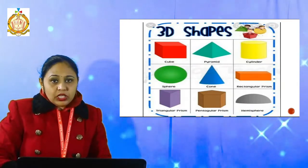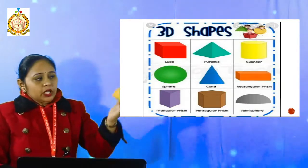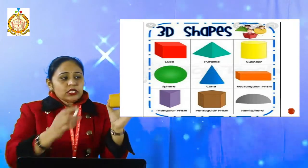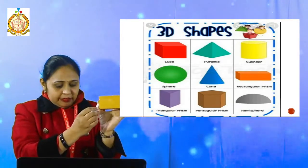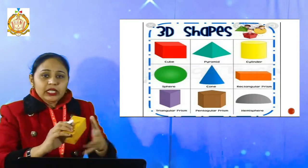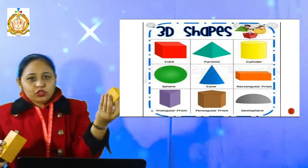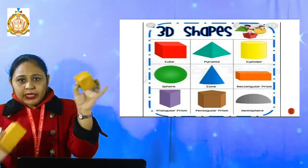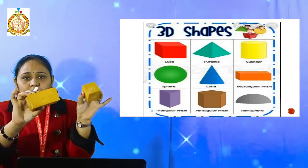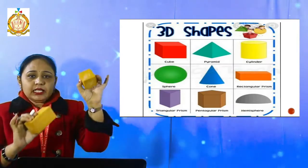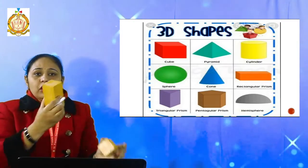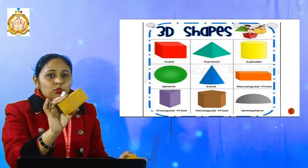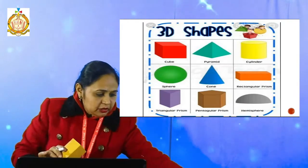Now going with the solids — this is a cuboid because its length, breadth, and height are different. When I take a cube, in the case of a cube the length, breadth, and height are the same. That is called a cube. When length, breadth, and height are different, that is called a cuboid.